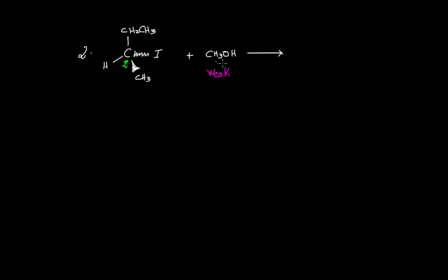The rich site in methanol is the lone pairs on oxygen. When we have a second degree carbon and a weak nucleophile, this means we have an SN1 mechanism. For an SN1 mechanism, bond breaking happens first and bond forming follows later. Therefore in the first step I will have heterolytic cleavage of the carbon–iodide bond to form the carbocation.